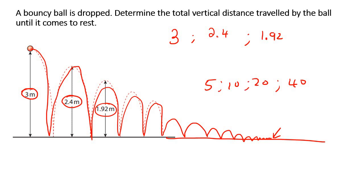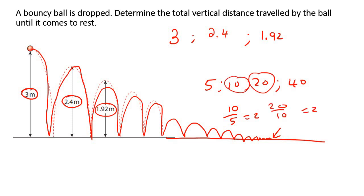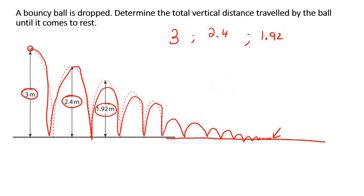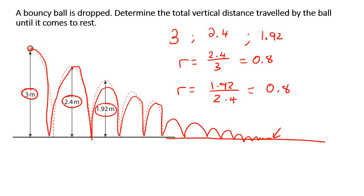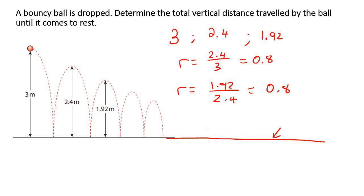But how did you actually get that? You can get that by saying this number divided by this number, then also this number divided by this number. So now when I give you these ones, don't panic — just go do the same thing. You can work out 2.4 over 3, and that gives you 0.8, or 4 over 5. Then we can say 1.92 over 2.4 — it's also 0.8. So the way that this ball is going to keep bouncing, it's going to have a constant ratio.